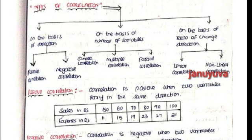On the basis of direction, there are two types: Positive Correlation and Negative Correlation. Positive Correlation — correlation is positive when two variables vary in one direction.